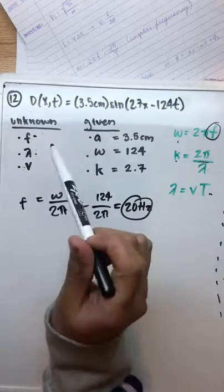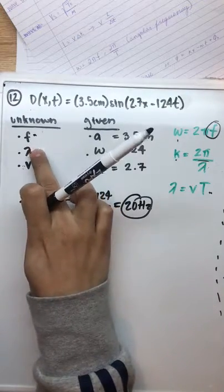We have found f, and now we can move on to finding either wavelength or velocity.